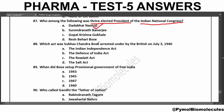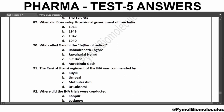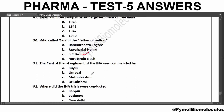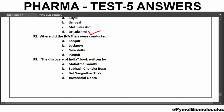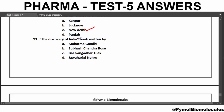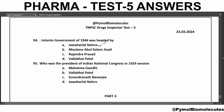Poorna Swaraj was first declared by the Congress at the Lahore session. The session of Congress and the Muslim League that reached an understanding to create a joint front against British rule was the Lucknow session. Who was thrice elected as President of the Indian National Congress? The answer is Dadabhai Naoroji. Subhas Chandra Bose was arrested under the Defense of India Act on July 3, 1940. Bose set up the provisional government of free India in 1943. Gandhi was called the Father of the Nation by Subhas Chandra Bose. The Rani of Jhansi Regiment of the INA was commanded by Dr. Lakshmi. The INA trials were conducted in New Delhi. The Discovery of India was written by Jawaharlal Nehru. The Interim Government of 1946 was headed by Jawaharlal Nehru, who was also the President of the Indian National Congress in the 1929 session.